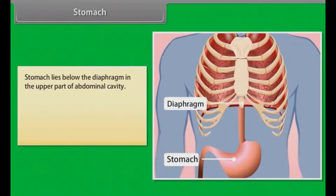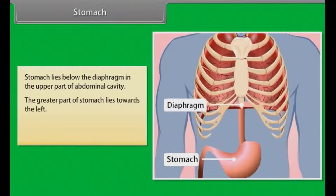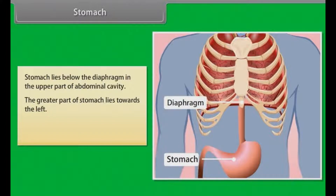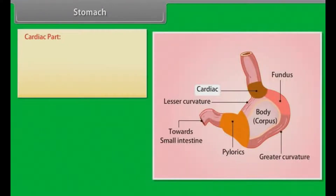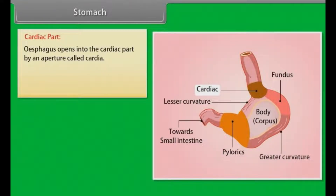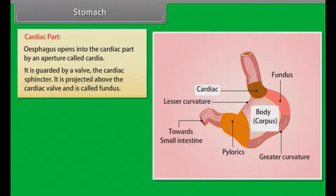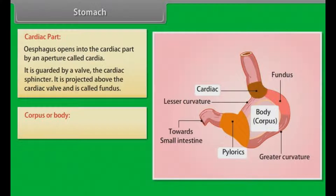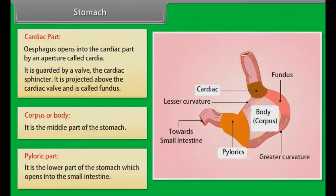The stomach lies below the diaphragm in the upper part of the abdominal cavity. The greater part of stomach lies towards the left. The stomach can be divided into the following parts: the cardiac part, where the esophagus opens by an aperture called cardia guarded by the cardiac sphincter; the fundus, which is projected above the cardiac valve; the corpus or body, which is the middle part; and the pyloric part, which is the lower part that opens into the small intestine.